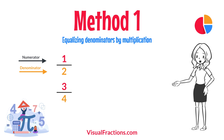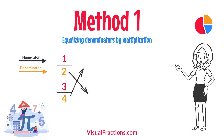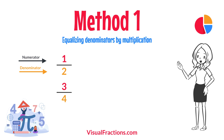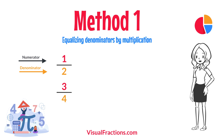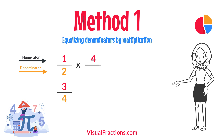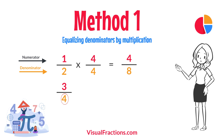First, let's equalize the denominators by multiplying each fraction's numerator and denominator by the other fraction's denominator. This method works by using the denominators of each fraction to create a common denominator, allowing us to compare the fractions directly. For one half, multiply both the numerator and the denominator by four — the denominator of three quarters. This gives us four eighths.